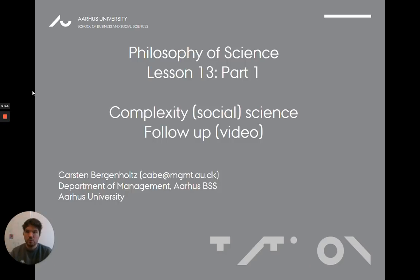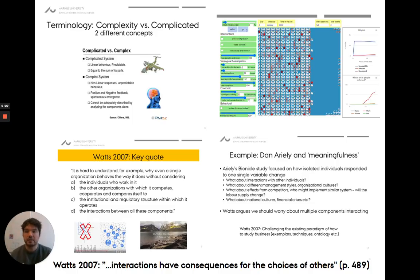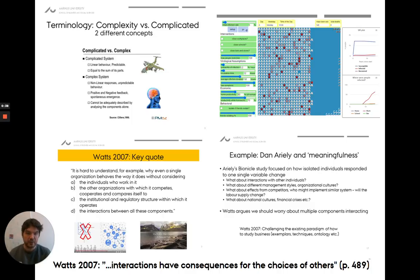What I hope lesson 12 made clear is that the word 'complex' does not just mean something is really difficult or complicated. There is a fundamental difference between these two concepts. The word 'complex' means something about how elements in a system interact, how they provide feedback to each other, and how that can change the dynamics of a system.